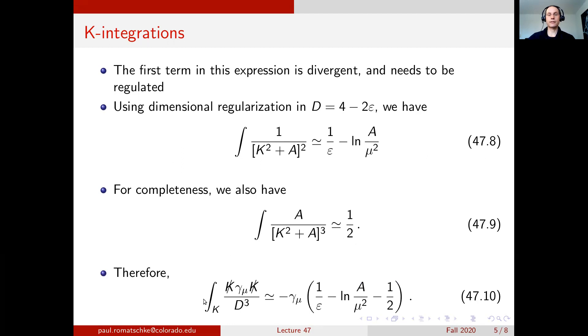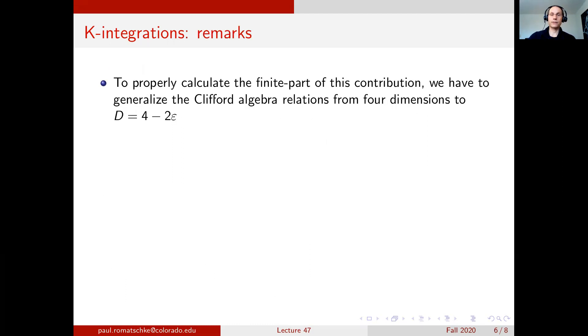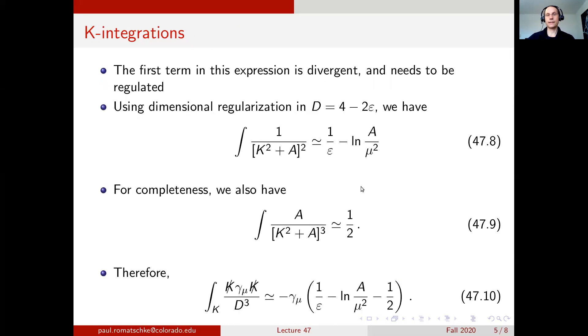So we find that the integration of the one term in the numerator that we discussed in this lecture is given as minus gamma mu times the divergent term (1 over epsilon minus logarithm of A over mu squared) minus one half. However, I note that there is a finite part contribution to this that we haven't properly dealt with, and that comes from the simple fact that we have a divergent integral here.